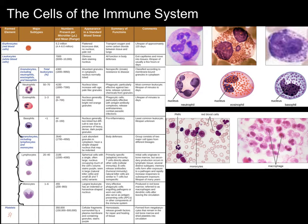But eosinophils' granules are filled with anti-helminth and anti-parasitic chemicals. They work in concert with certain antibodies, particularly IgE, and they're really effective at getting rid of these parasites — they're really one of the few things that can.